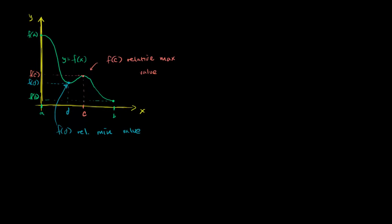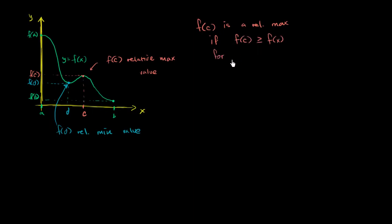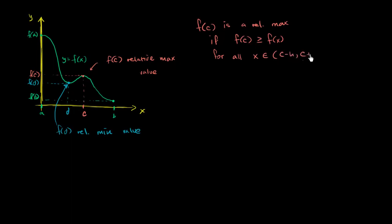But how could we write that mathematically? Here I'll give you the definition, which is really just a more formal way of saying what we just said. We say that f of c is a relative maximum value if f of c is greater than or equal to f of x for all x near c. To be more rigorous — because what does it mean to be near c — we say for all x within an open interval from c minus h to c plus h, where h is some value greater than zero.